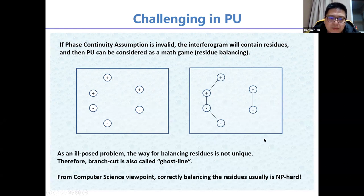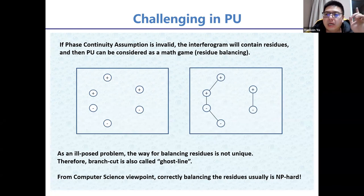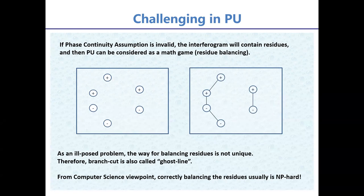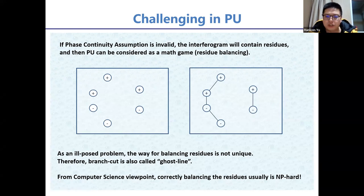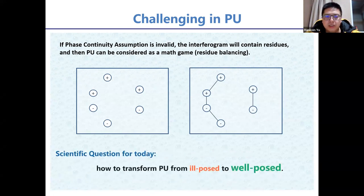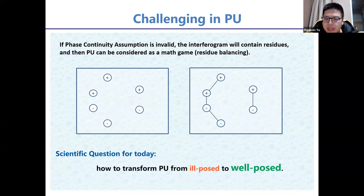Phase unwrapping is an ill-posed problem, so the way of balancing residues is not unique — a positive residue could be balanced by different negative residues, and we don't know which is optimal. Branch cuts are also called ghost lines. From a computer science viewpoint, correctly balancing residues is NP-hard, meaning you cannot identify the optimal solution without trying all possibilities. The scientific question is: how can we transfer phase unwrapping from ill-posed to well-posed?